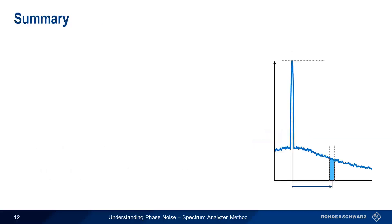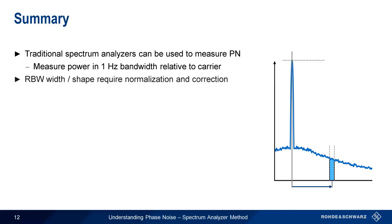Let's end with a brief summary. Traditional general-purpose spectrum analyzers can be used for making phase noise measurements. This is done by measuring the power in a 1 Hz bandwidth relative to the power of the carrier at a given offset. Since spectrum analyzers don't possess a perfectly rectangular 1 Hz resolution bandwidth filter, bandwidth normalization and shape correction are required. These are normally automatically handled by the instrument, either in the form of a noise marker or as part of an automated phase noise measurement routine.